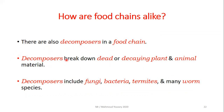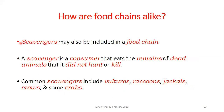There are also decomposers in the food chain. Decomposers break down dead or decaying plant and animal material. Decomposers include fungi, bacteria, termites, and many worm species. There are also scavengers in the food chain. A scavenger is a consumer that eats the remains of dead animals that it didn't hunt or kill.